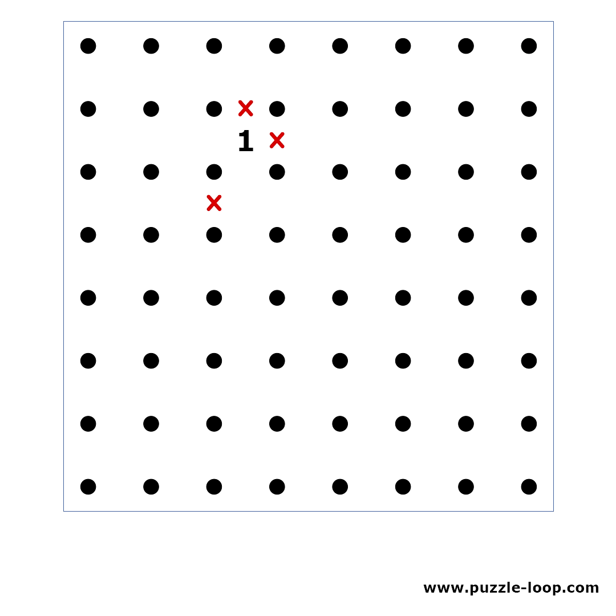In a similar scenario we can place a line here. That is because otherwise, if we place an X, we cannot complete the 1.